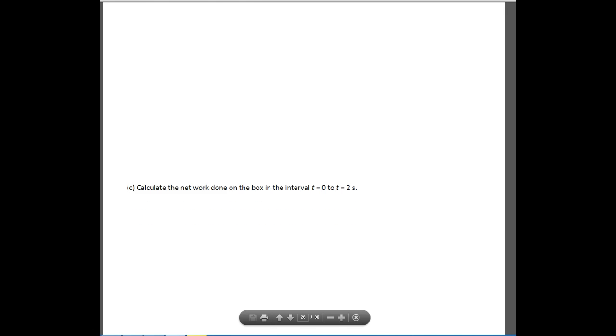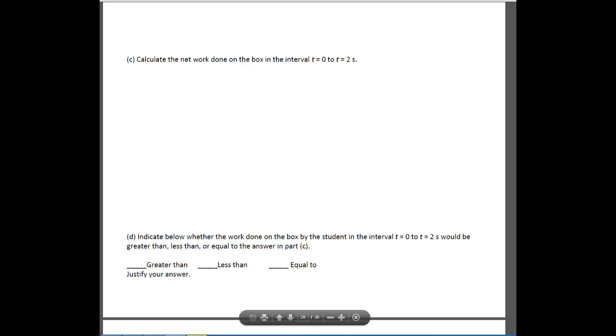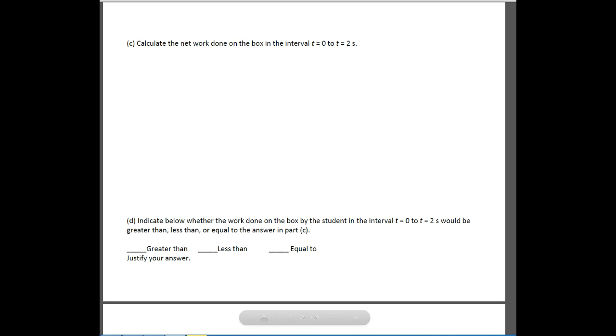And then we're going to go ahead and calculate the net work done on the box in an interval of 0 to 2 seconds. This one you can either do an integral where you say work is equal to power times time. Or you can do it the way that I'm about to do it. And that's just use what we've been doing so far. So here we've got work is equal to the change in the kinetic energy. If we remember, we've got to look at the kinetic energy. So at time 0, we had a speed. And at time 2, we need to figure out what is this new speed.